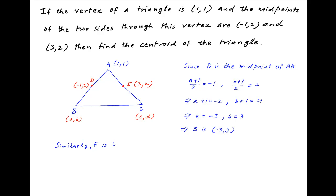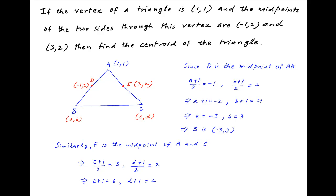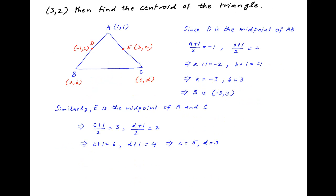Similarly, since E is the midpoint of AC, we have (c + 1) / 2 = 3 and (d + 1) / 2 = 2. This implies that c + 1 = 6 and d + 1 = 4, therefore c = 5 and d = 3. So the coordinates of vertex C are (5, 3).